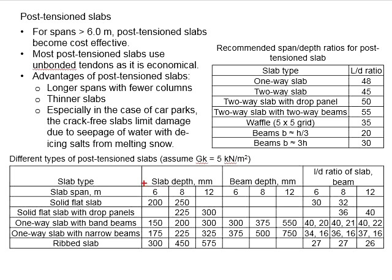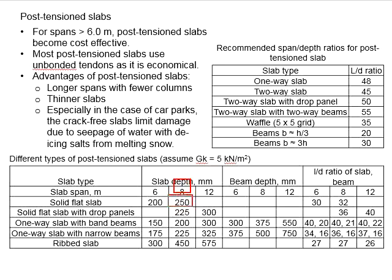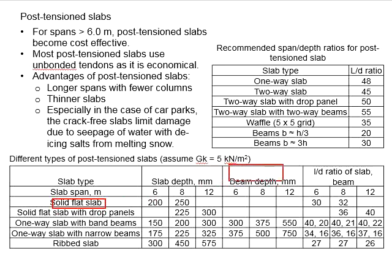For typical span lengths of 6, 8, and 12 meters, looking at the solid flat slab example: for a 6-meter span the recommended slab thickness is 200 mm; for an 8-meter span the recommended depth is 250 mm. The flat slab system is not recommended for a 12-meter span, so that cell is left blank. As flat slab systems do not involve beams, there is no recommended beam depth.